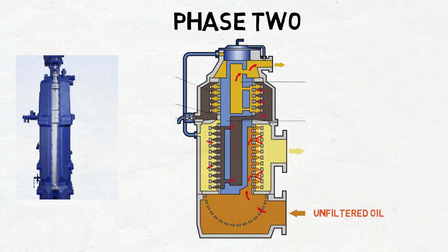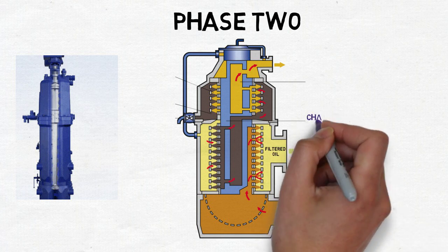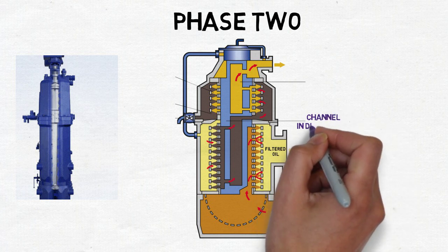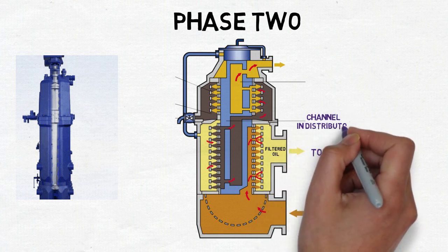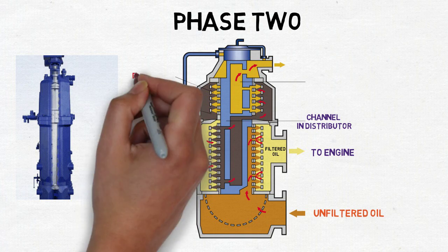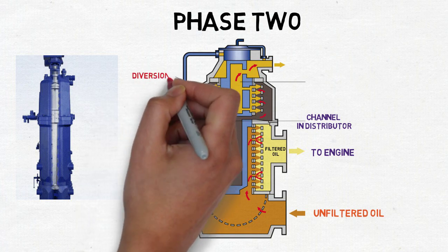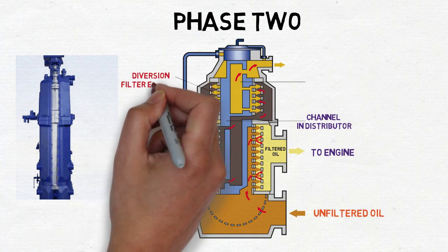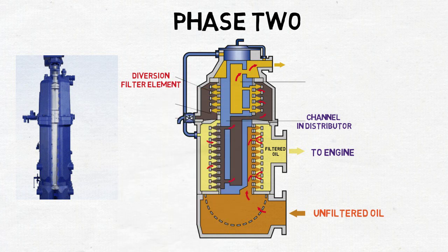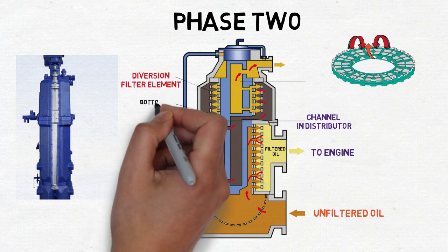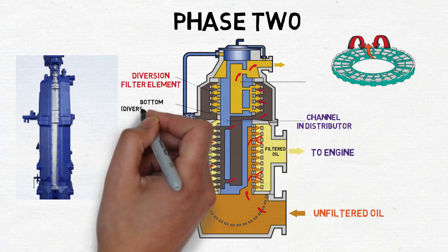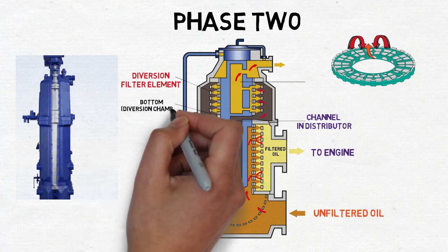Part of the filtered oil in the chamber can now pass through the channel in the distributor filter and through the diversion filter elements from inside to outside, removing the trapped particles from the outer side of the elements.